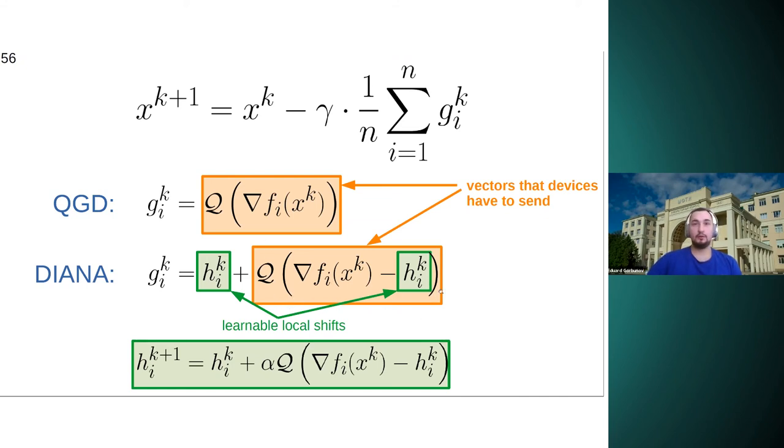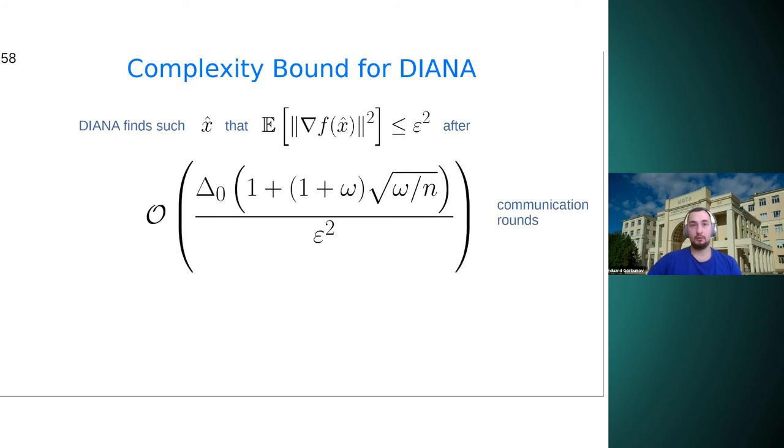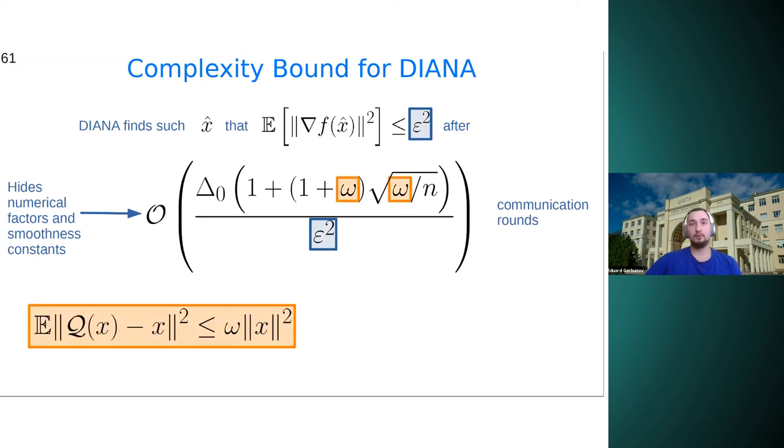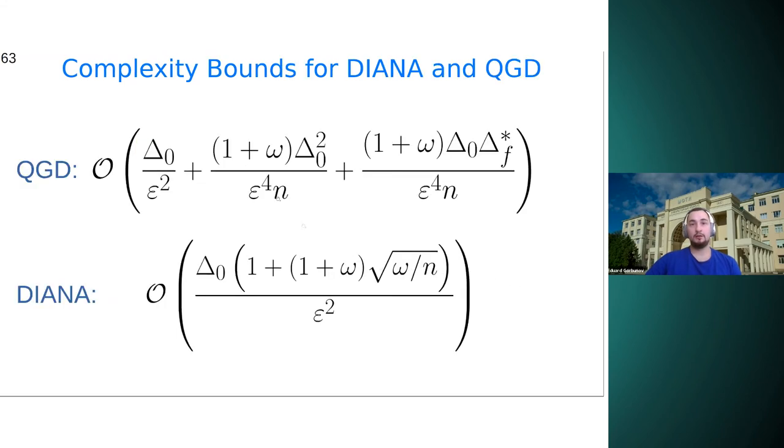And one can prove that DIANA has the following communication complexity. And here, the dependence on epsilon is optimal. The dependence on omega is slightly worse than in QGD. Let me show you once again. So in QGD, the dependence on omega in these terms is like the power of one. And in DIANA, when omega is much bigger than one, the dependence on omega is proportional to omega to the power of three over two. And the natural question appears, how to improve this dependence on omega. Because when we use compression operators like rand-K, omega is proportional to D over K. And typically, the number of peaked components is small, K is small. Therefore, we want this complexity, we want this dependence to be better.